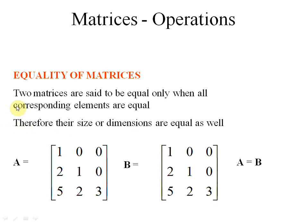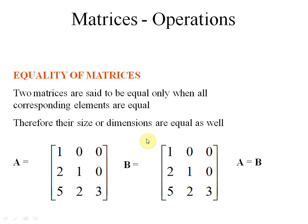The first one is the equality matrix. Equal matrix means both matrices A and B are equal if and only if all the elements and the positions of the elements are the same. If the first entry is 1 in A, it should be 1 in B. You can see the first row is 100, second row is 210, and third row is 523 in matrix A — and in matrix B we also have 100, 210, and 523. All entries of both matrices are the same, so A equals B.